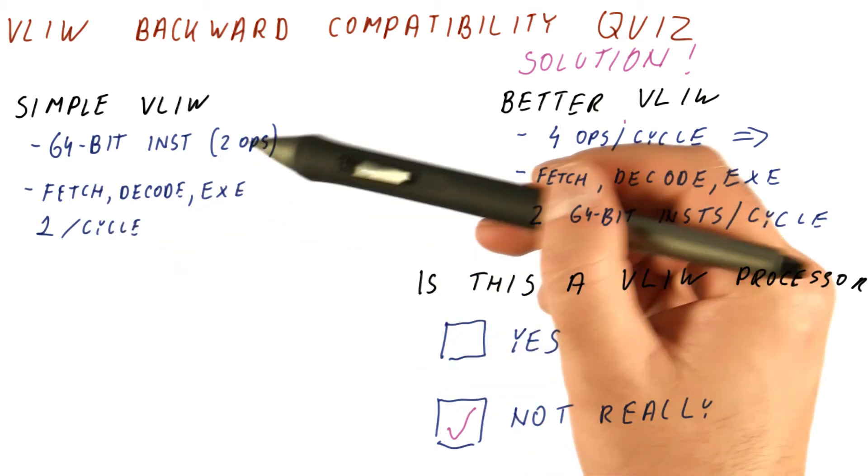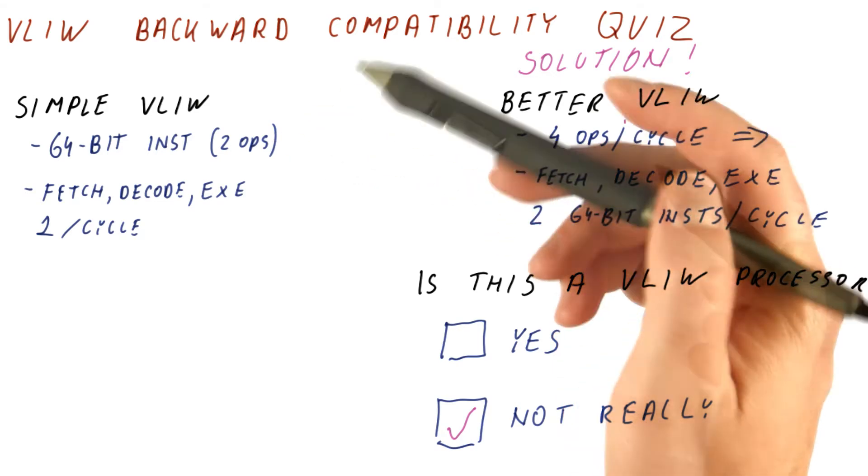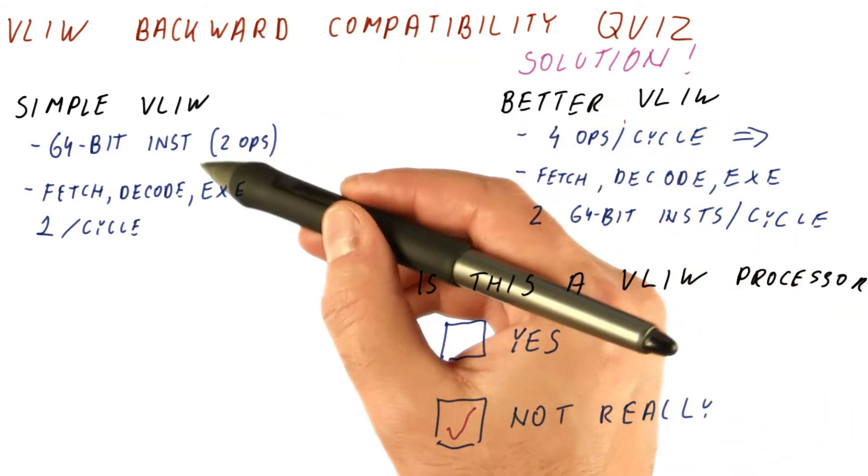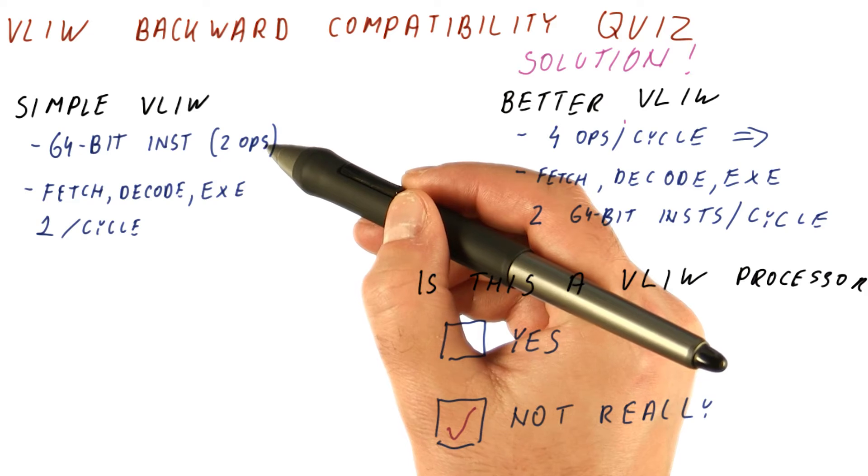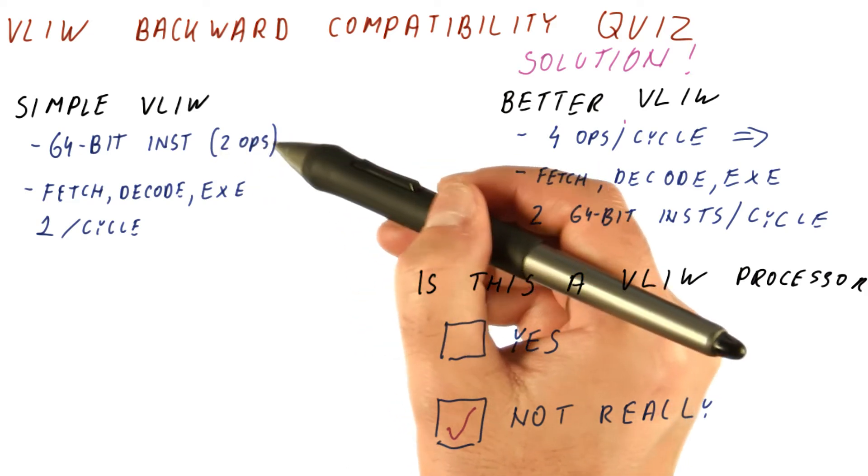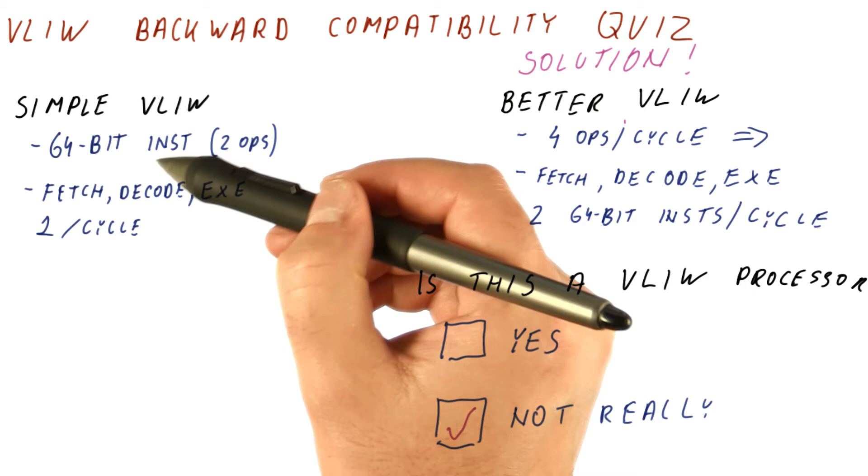Thus every cycle we are guaranteed that we are doing independent operations. When we run programs compiled for this processor, the compiler only guarantees that the two operations in the same instruction are in parallel.